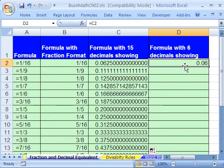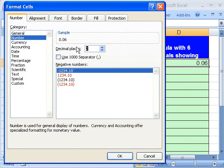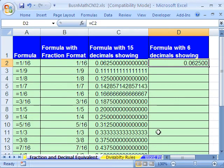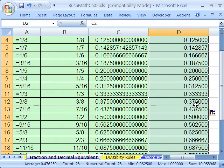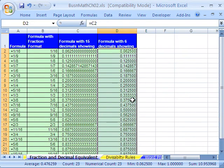Now let's do the same thing here. Control-1, I'm going to show six decimal places, and then I'm going to double click and send it down. So that's a quick way to get a table of fraction decimal equivalents.